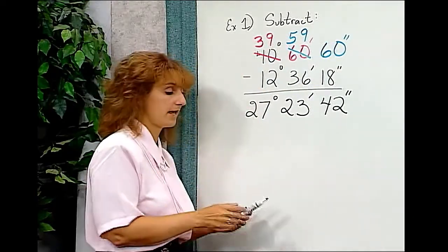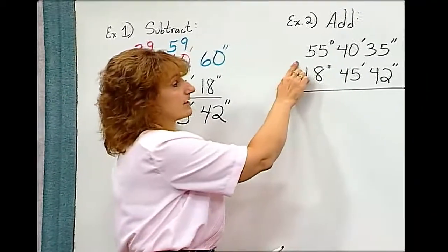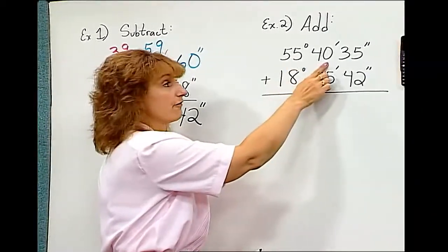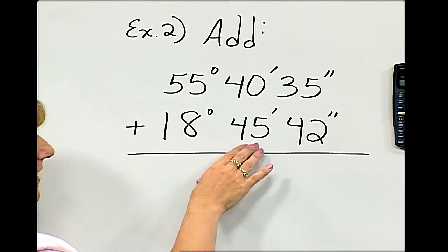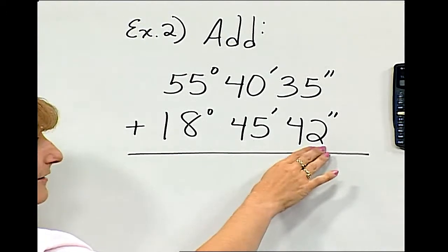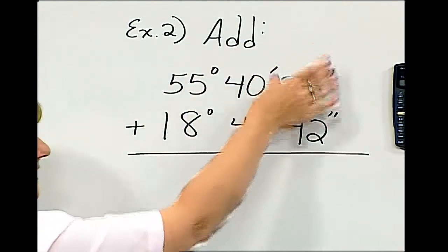Let's see what happens when we add. We start out here. Here we want to add 55 degrees, 40 minutes, 35 seconds to 18 degrees, 45 minutes, 42 seconds. We've lined up our columns. Degrees, minutes, and seconds.